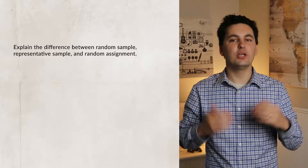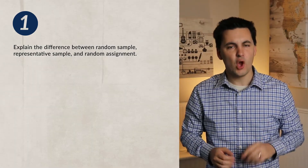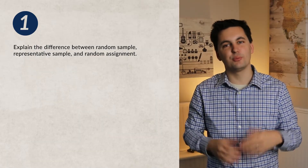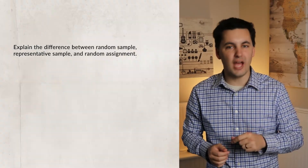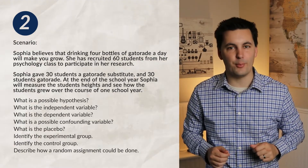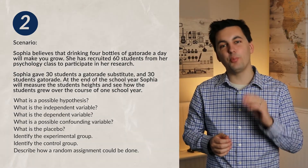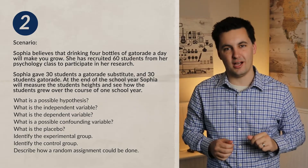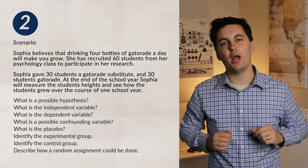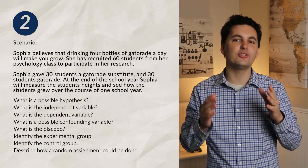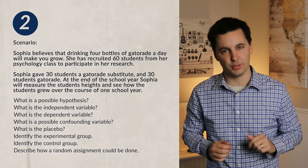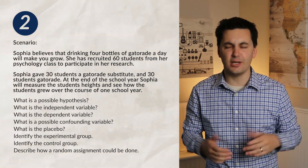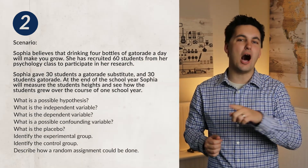Alright, we've gone over a variety of different aspects of a quality experiment — now it's time to practice. Read the scenario on the screen and answer the following questions. When you're done, check the comment section below for the answers. Don't forget to hit the subscribe button and like button — it helps support the channel and lets me know you want more AP Psychology videos. If you need more help, check out the Discord server linked in the description. As always, I'm Mr. Sin, and until next time, I'll see you online.